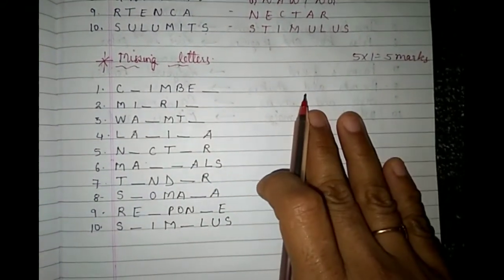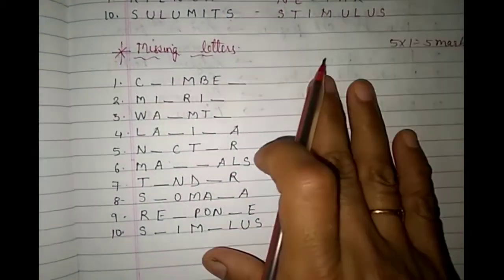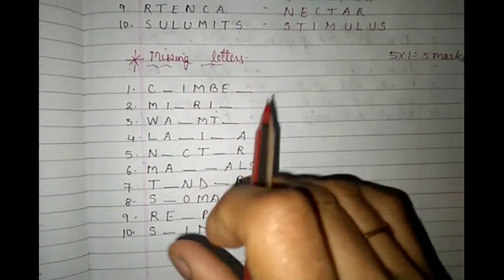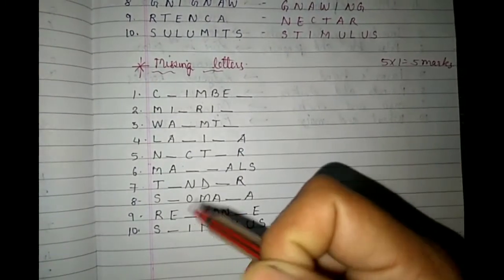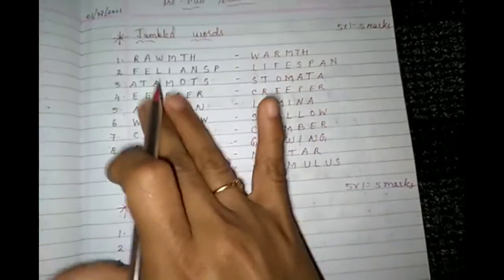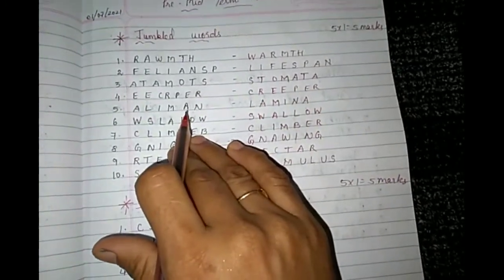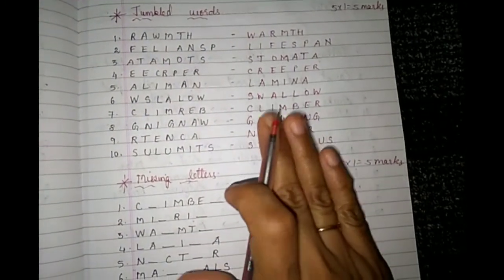Now you will have missing letter type questions for 5 marks as well — 5 questions of 1 mark each. Look carefully. As I had mentioned, the keywords and new words I give you — missing letters also come from those same words. Just as you got an idea from the jumble words that these are all familiar terms, similarly try these as well.